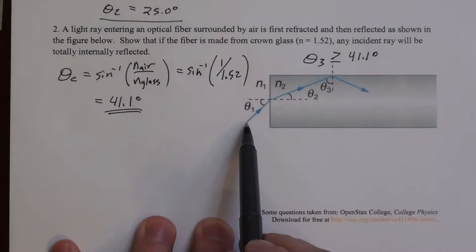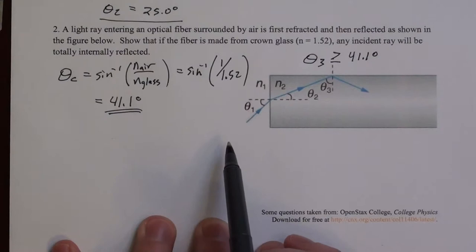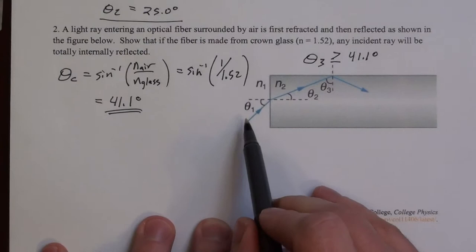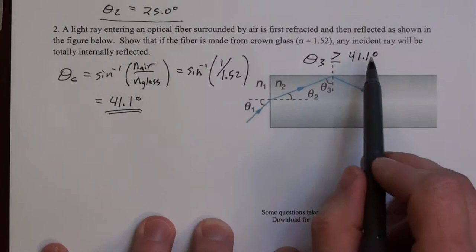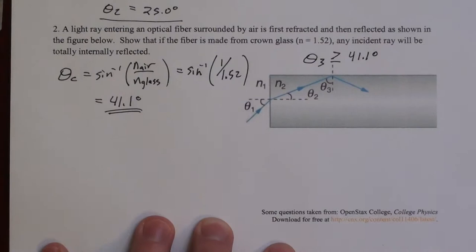Okay, so if we look at this diagram and think about it a little bit, when theta 1 becomes smaller, theta 3 becomes bigger. If you think about this a little bit, you should be able to convince yourself that that's true. So that means if theta 1 gets bigger, theta 3 gets smaller. And if theta 3 gets too small, if it gets smaller than 41.1 degrees, then we'll have some leakage in our fiber optic cable.